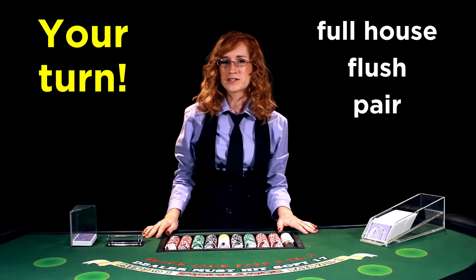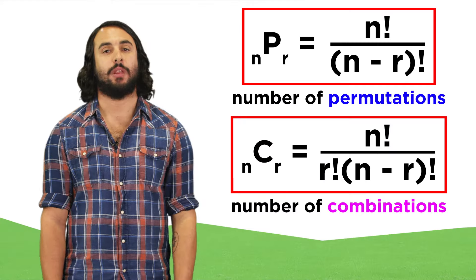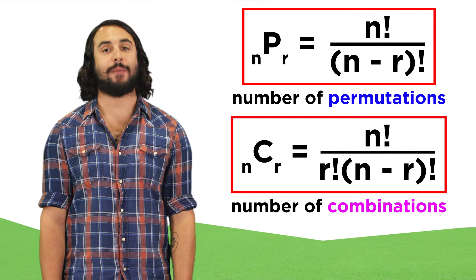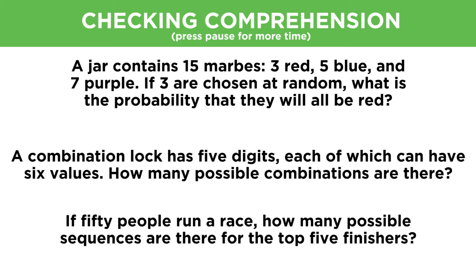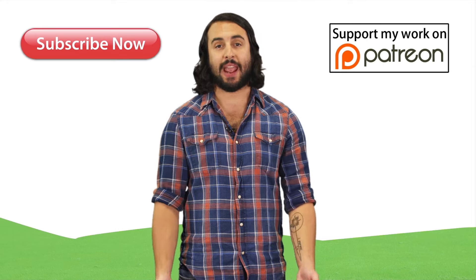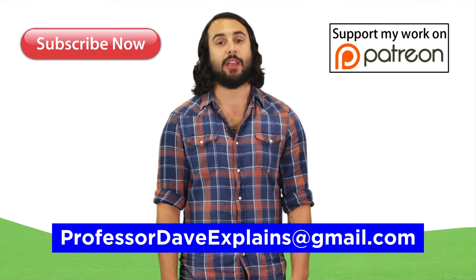See if you could calculate the probability of getting a full house, a flush, or a pair by using this kind of logic. So we should now understand permutations and combinations, and the ways they allow us to compute the probability of certain things happening. The extent to which this can be applied to complex events involving the stock market and human behavior is up for debate, but at least for the purposes outlined here, let's check comprehension. Thanks for watching, guys — subscribe to my channel for more tutorials, support me on Patreon so I can keep making content, and as always feel free to email me at professordaveexplains@gmail.com.